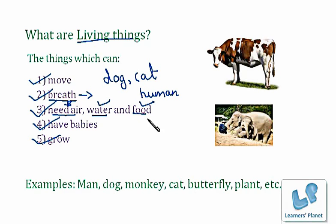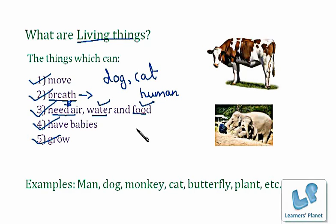Sometimes when you don't eat food — like when you were angry at your parents and refused to eat — you feel tired very fast and don't have a lot of energy to do work. That's why water and food are very important: they provide energy.